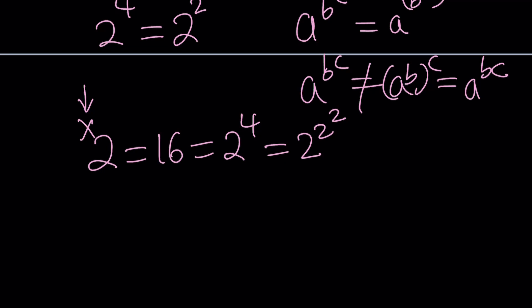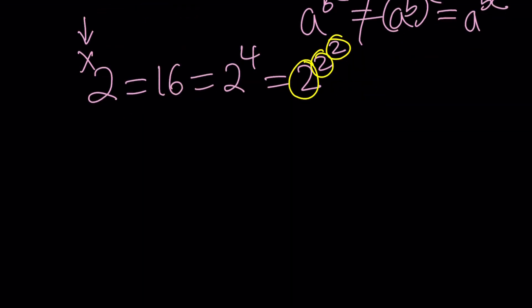You have to include the base. So, in this case, you have the 2, 3 times: 1, 2, and 3. So, from here, x would be a 3. Okay? Make sense?